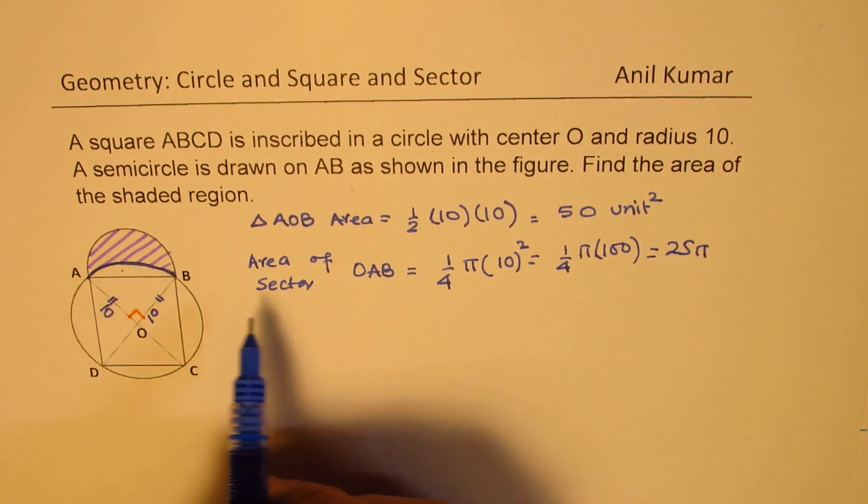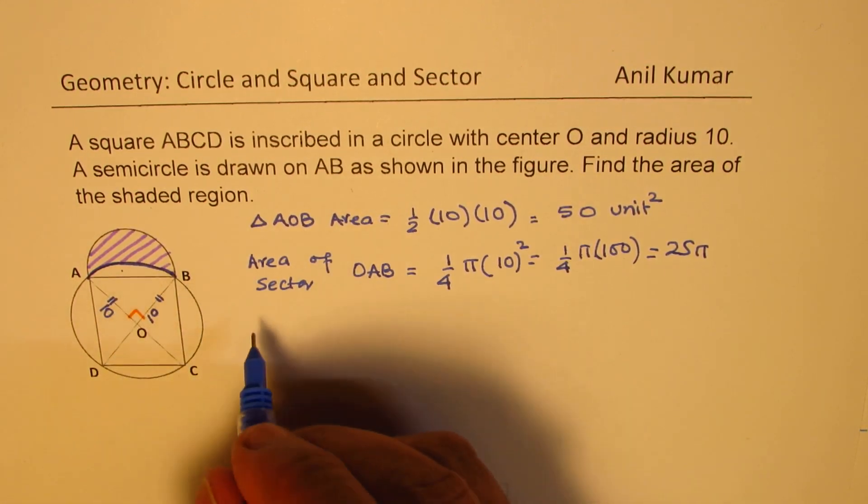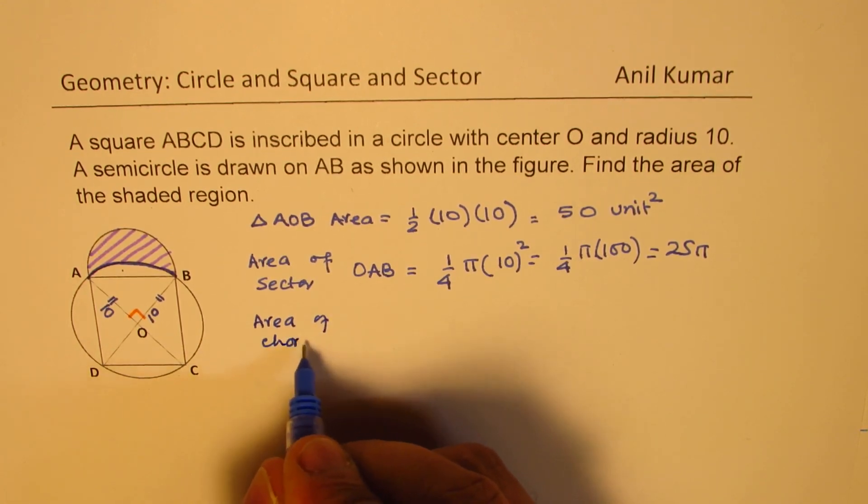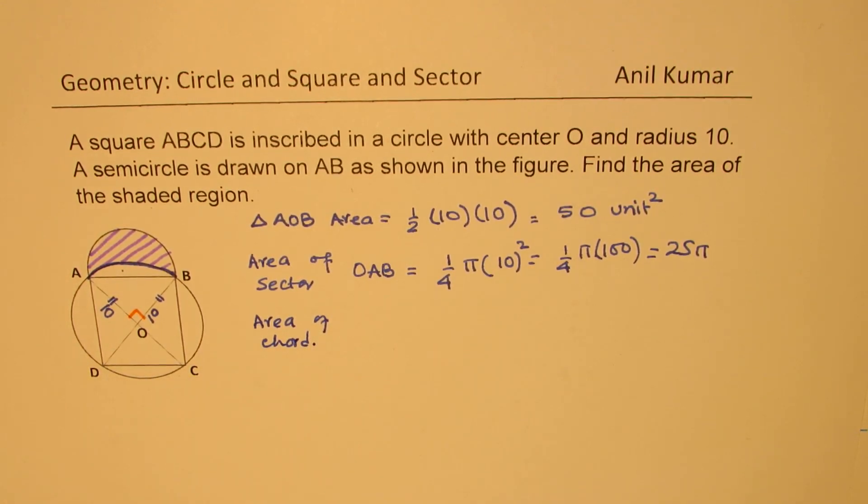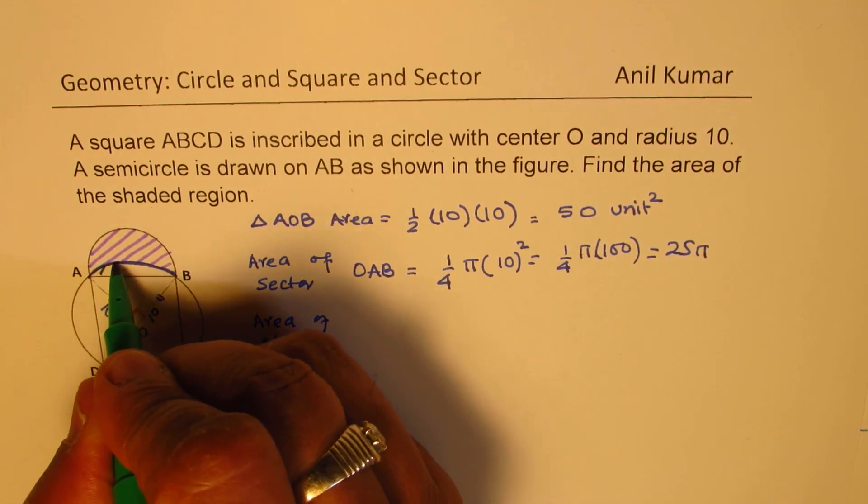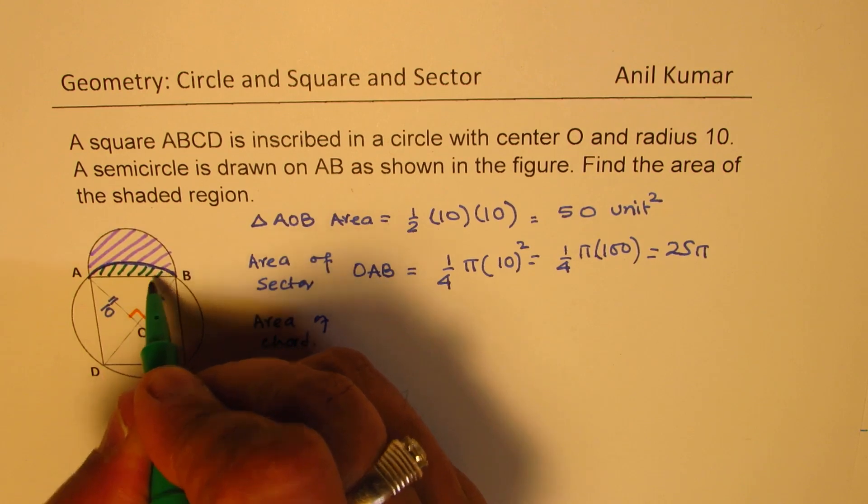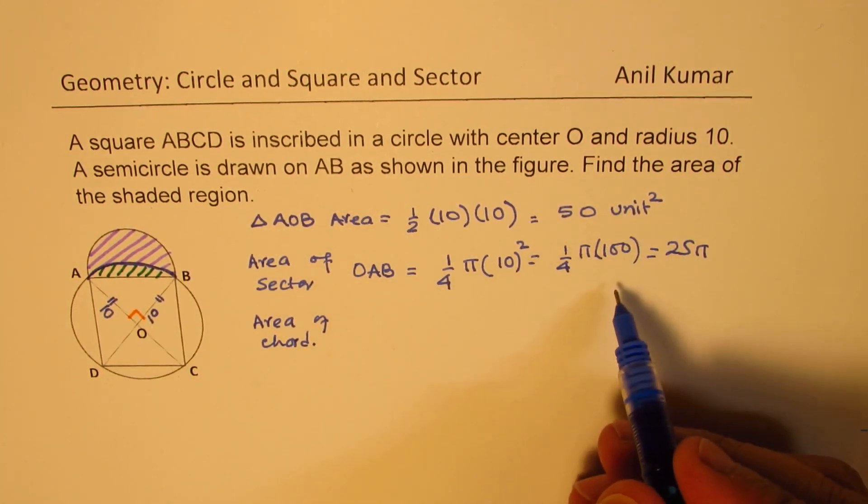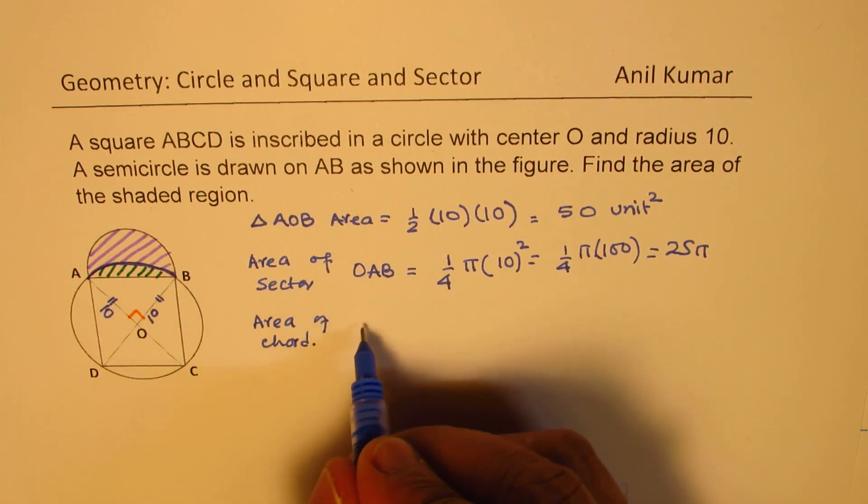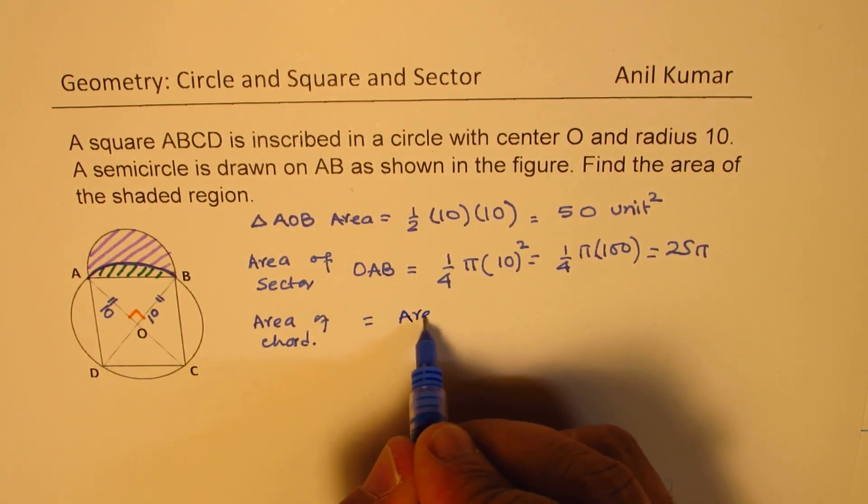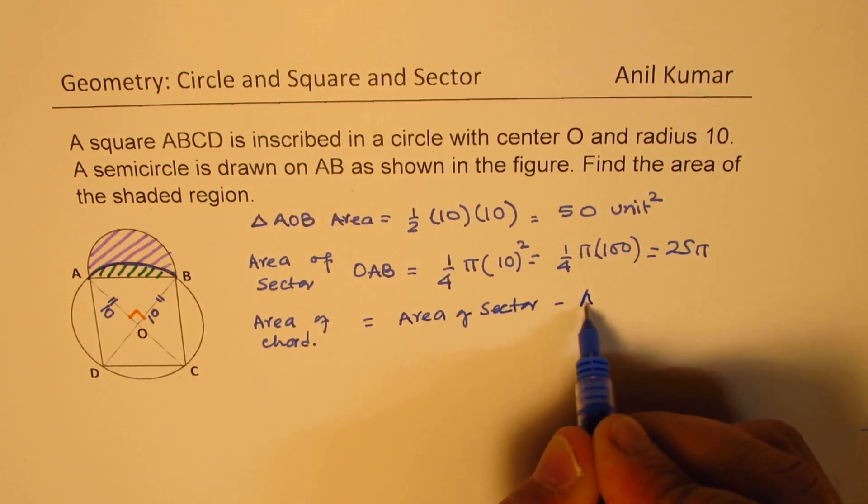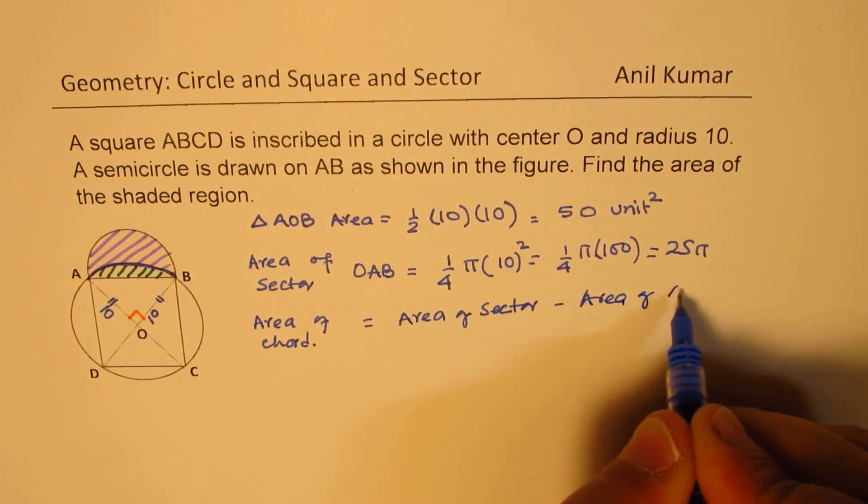Now, we can calculate the area of the chord. So now, area of chord, which is this side, right? This chord is basically difference of these two,